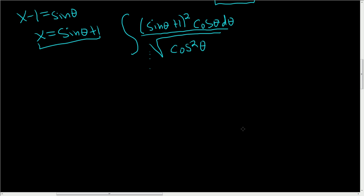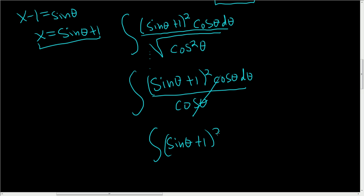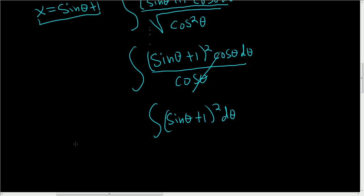We can assume cosine is positive, so the square root of cosine squared is just cosine. The cosine theta in the numerator and the cosine theta in the denominator cancel, so we end up with the integral of (sine theta plus 1) squared d theta. You can FOIL this out: sine squared plus 2 sine theta plus 1, d theta.